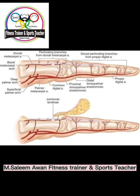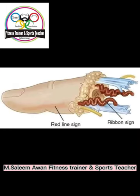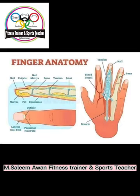The mnemonic to remember the carpal bones is: 'She Looks Too Pretty, Try To Catch Her.' S for scaphoid, L for lunate, T for triquetrum, P for pisiform, T for trapezium, T for trapezoid, C for capitate, and H for hamate.